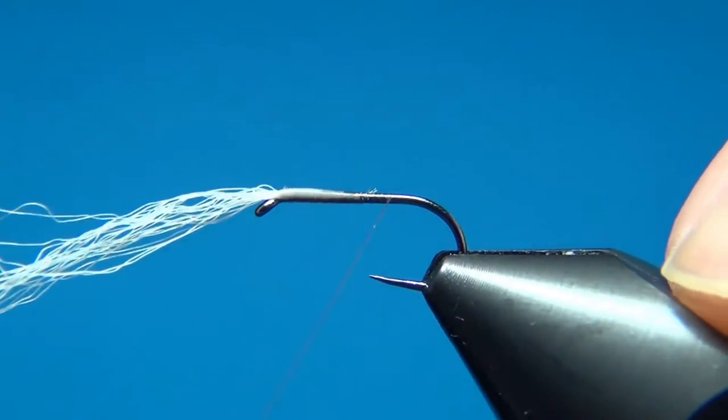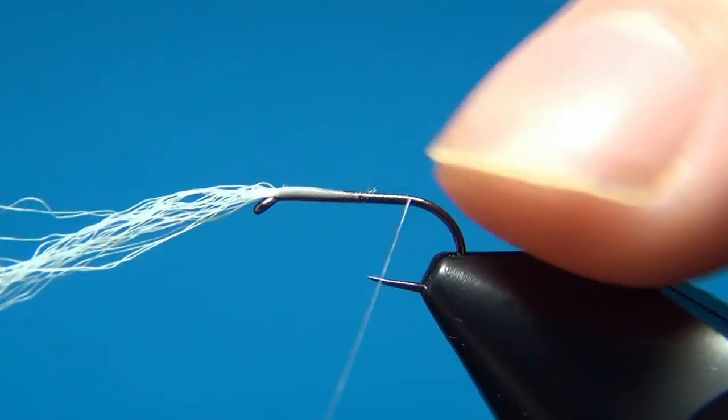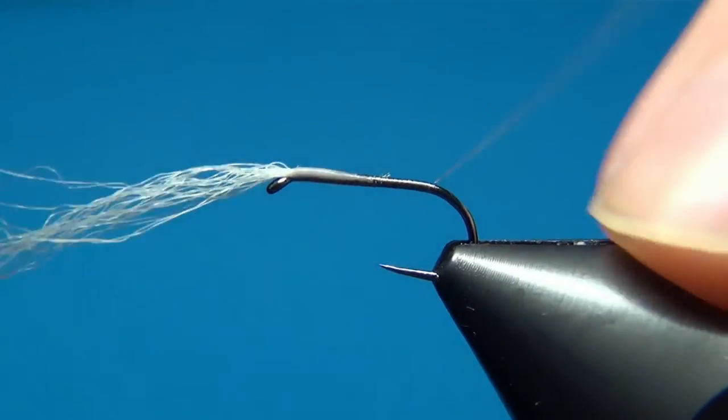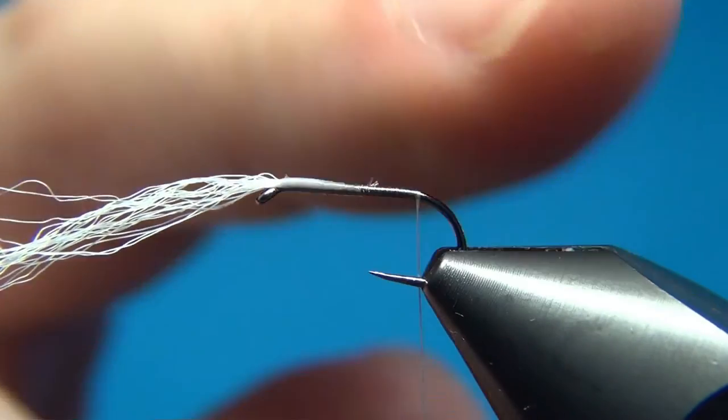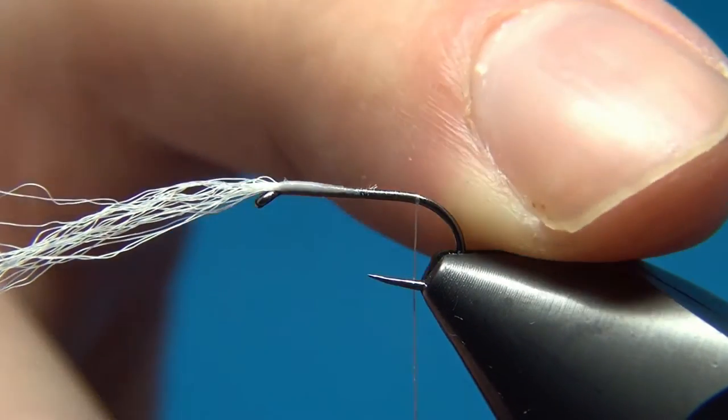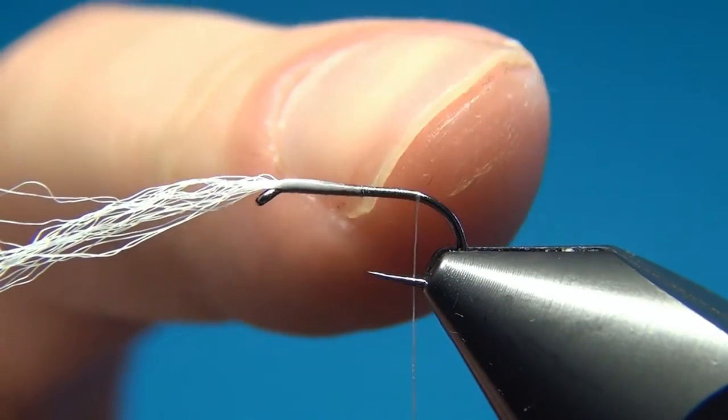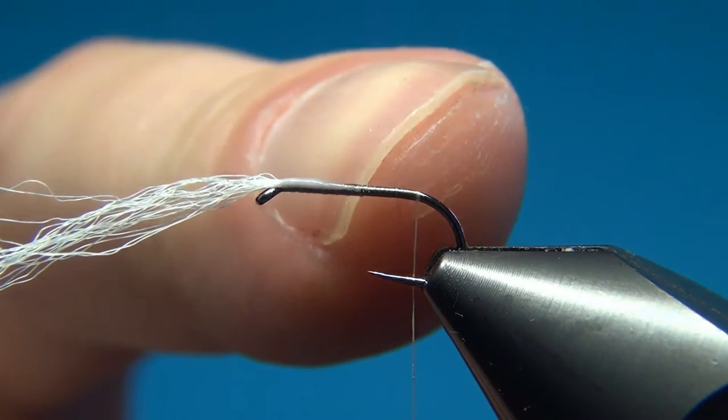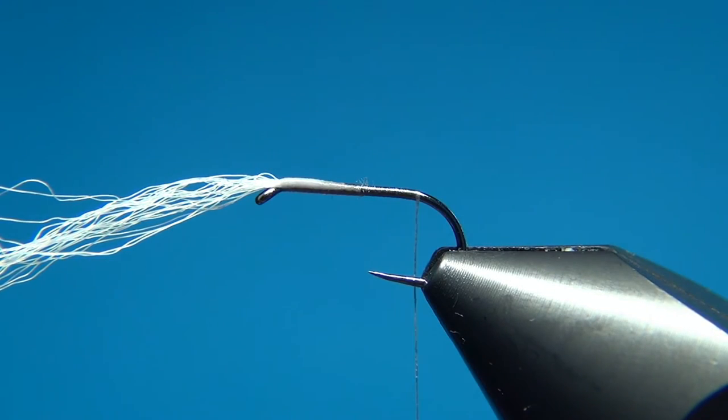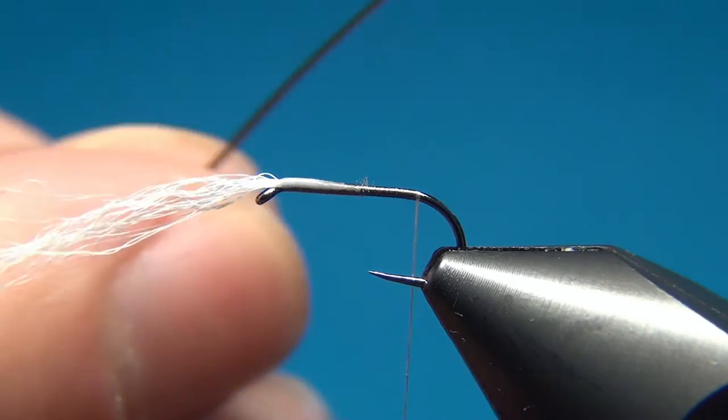Then take the thread down a little bit to where you want your body to start. For the body of this fly, you could go with many materials. You could use just a little dubbing with tinsel or some body quills or any other material. You just want to keep this really thin. What I like to use is some stripped peacock quill.